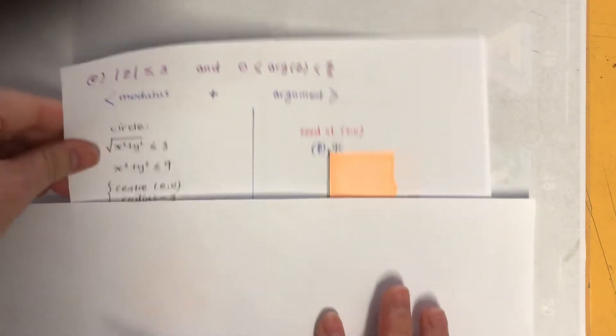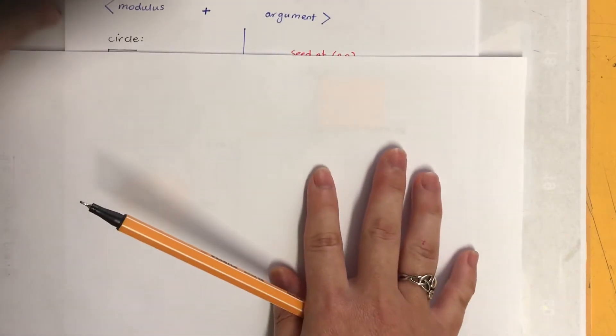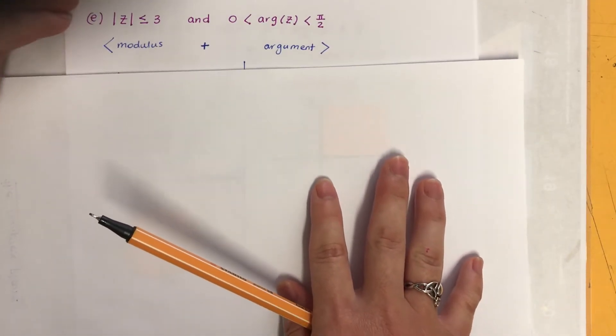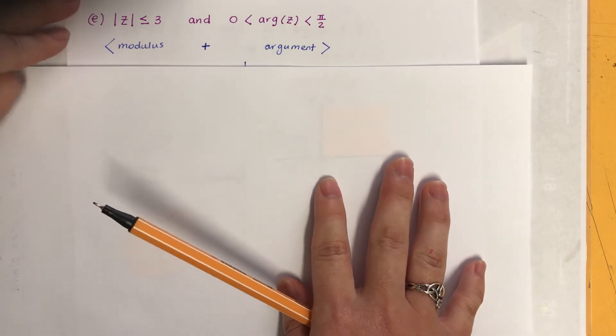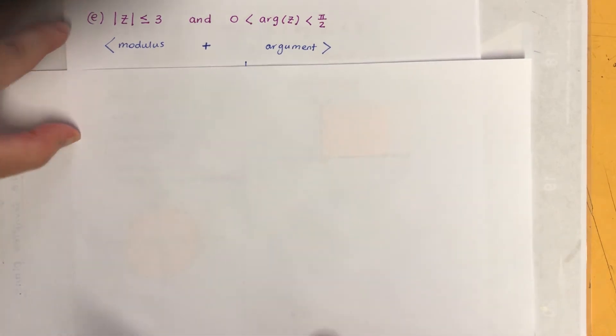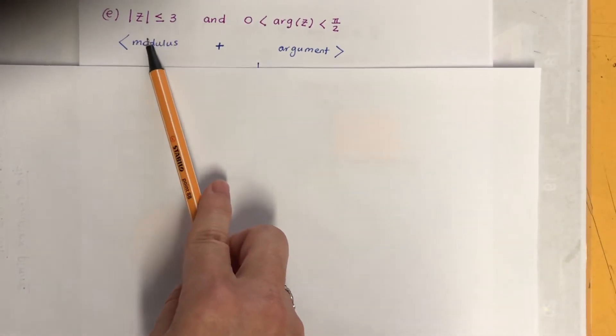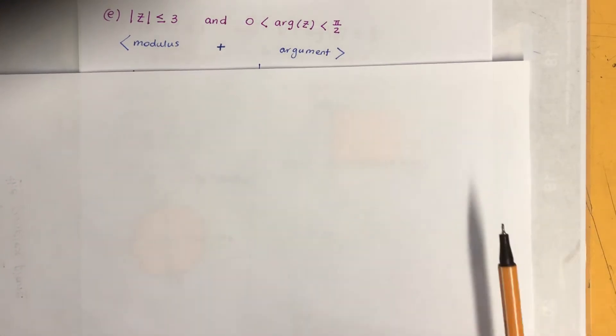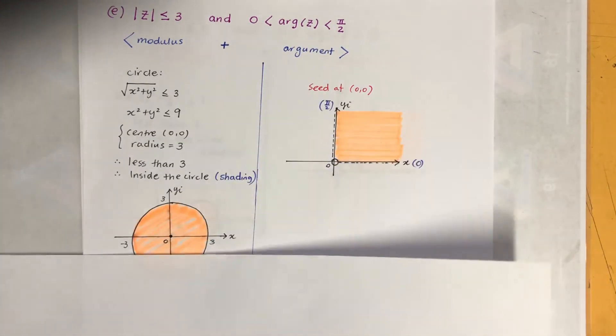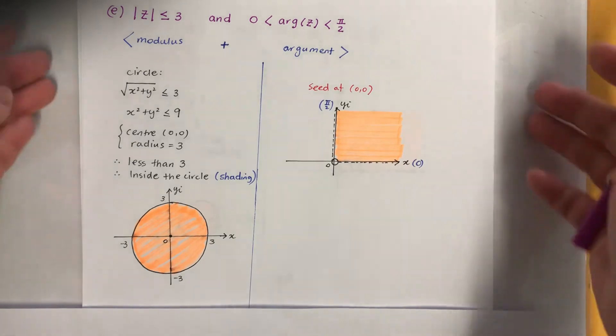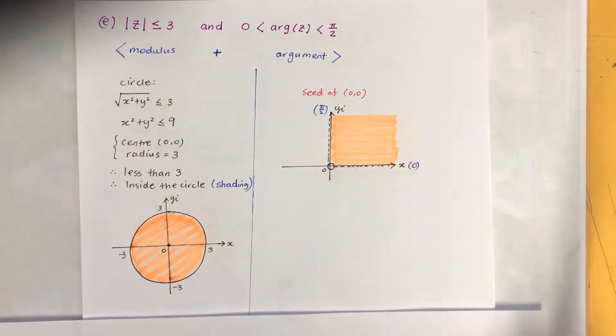Now this is the part we're going to have a little bit of challenge. Challenge is a good thing. We got the form of the modulus here and we've got argument. So what I've done is I just sketched it separately just to make it easy for us to think about.